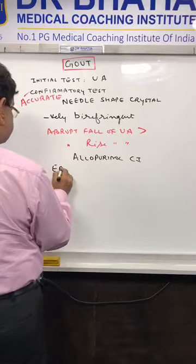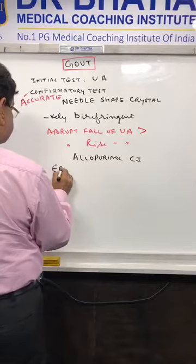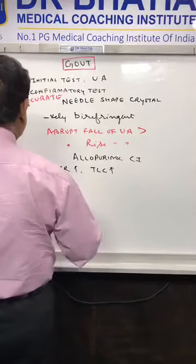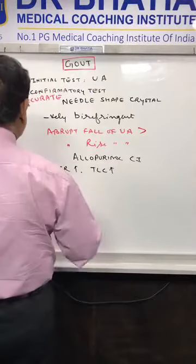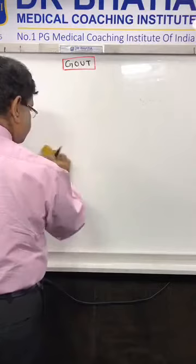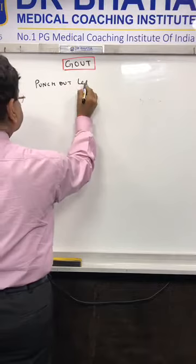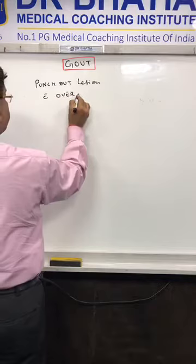Because gout is a type of inflammatory disorder, ESR and total leukocyte count are both raised. On X-ray, you see punched-out lesions with an overhanging margin.